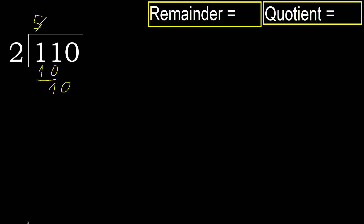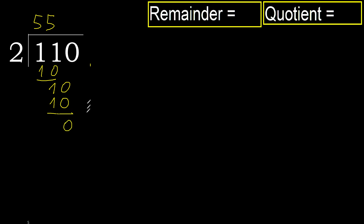10. 2 multiplied by 5 is 10, is not greater. Subtract 0. Next. There is no number, therefore finish.